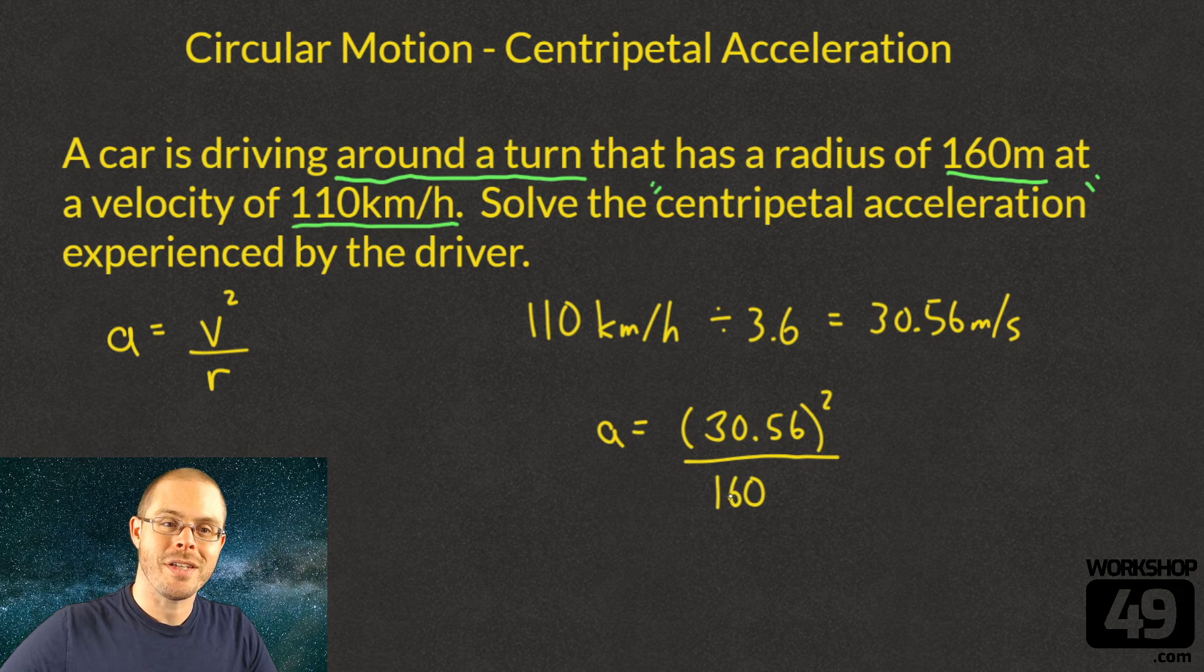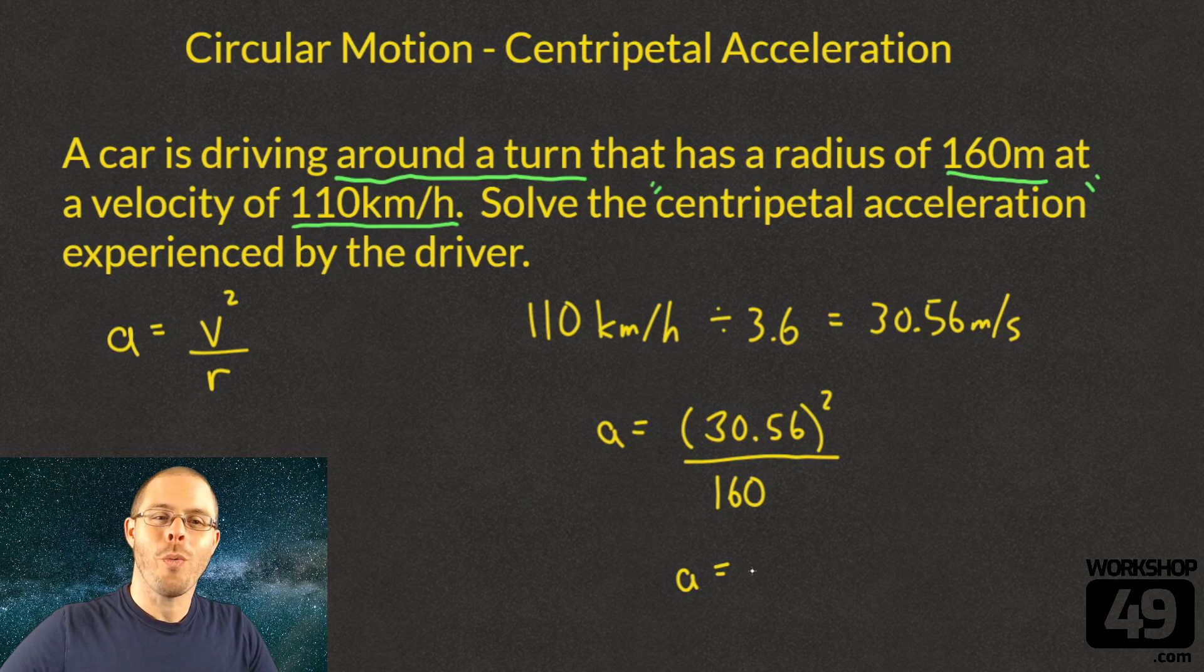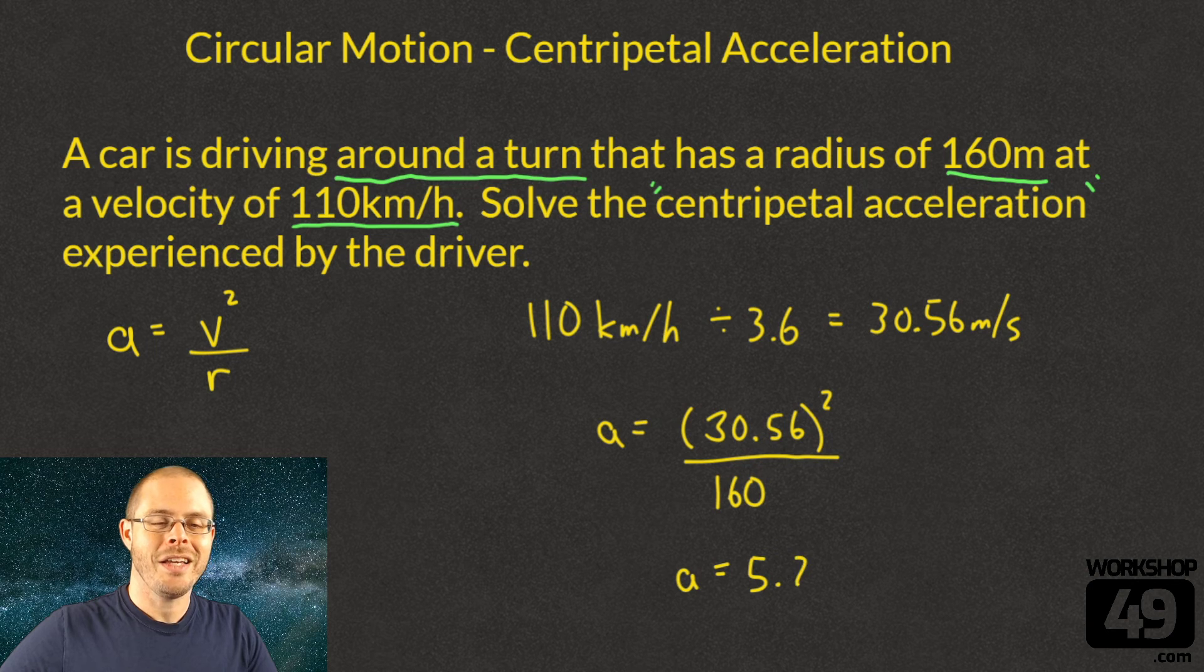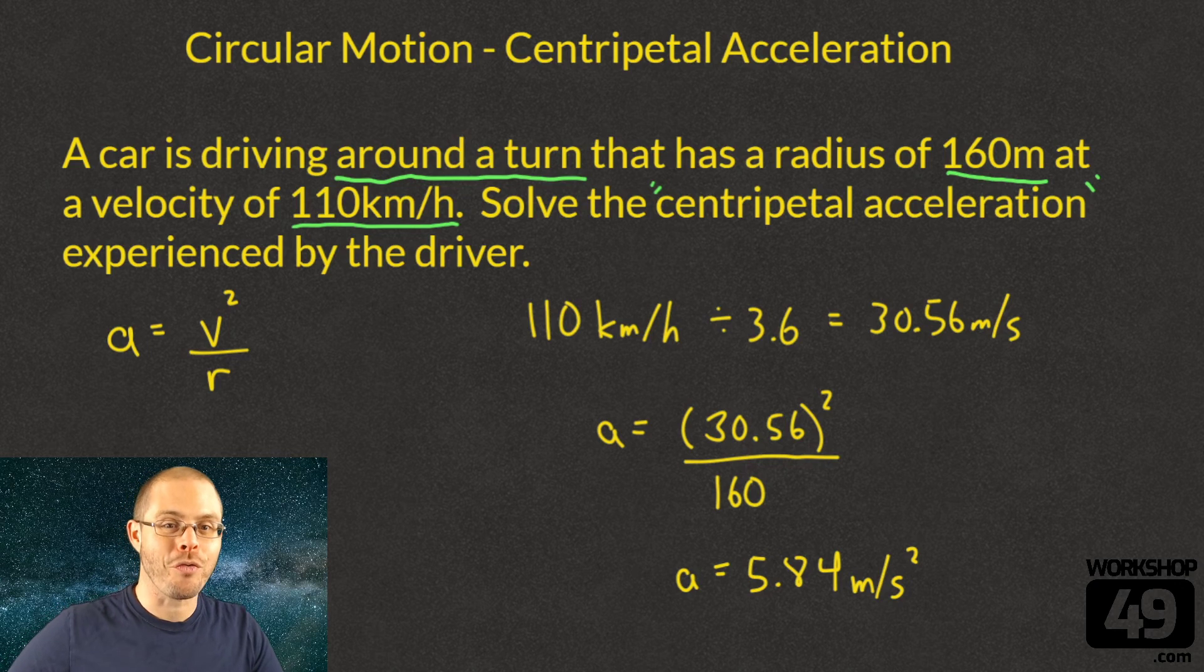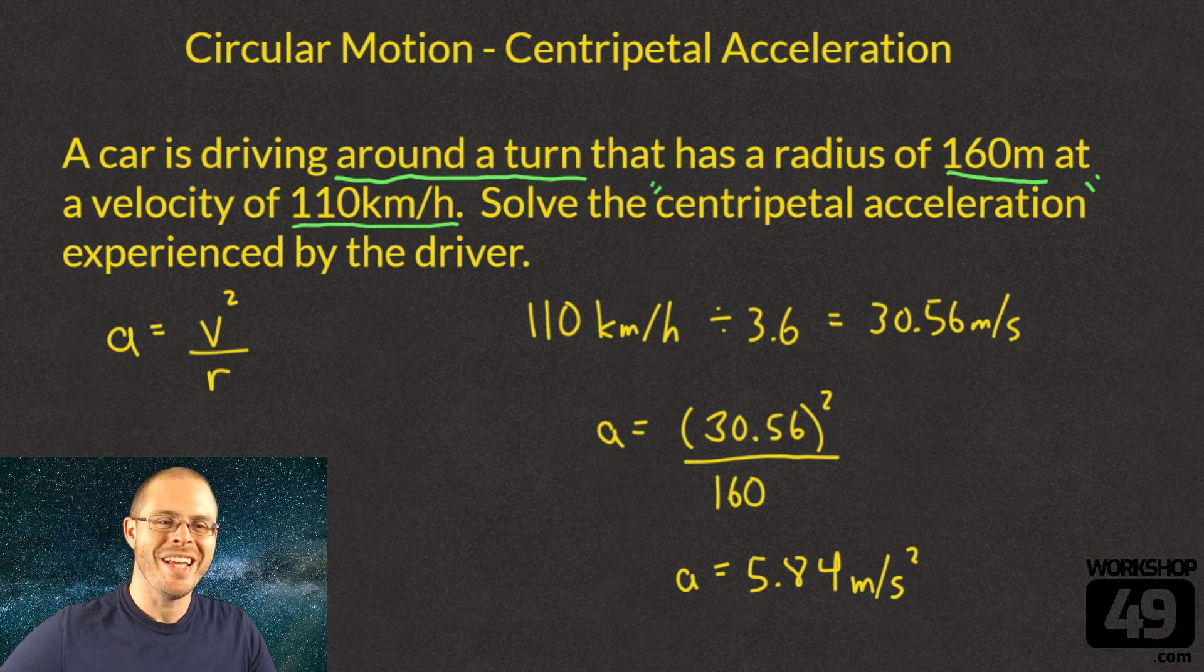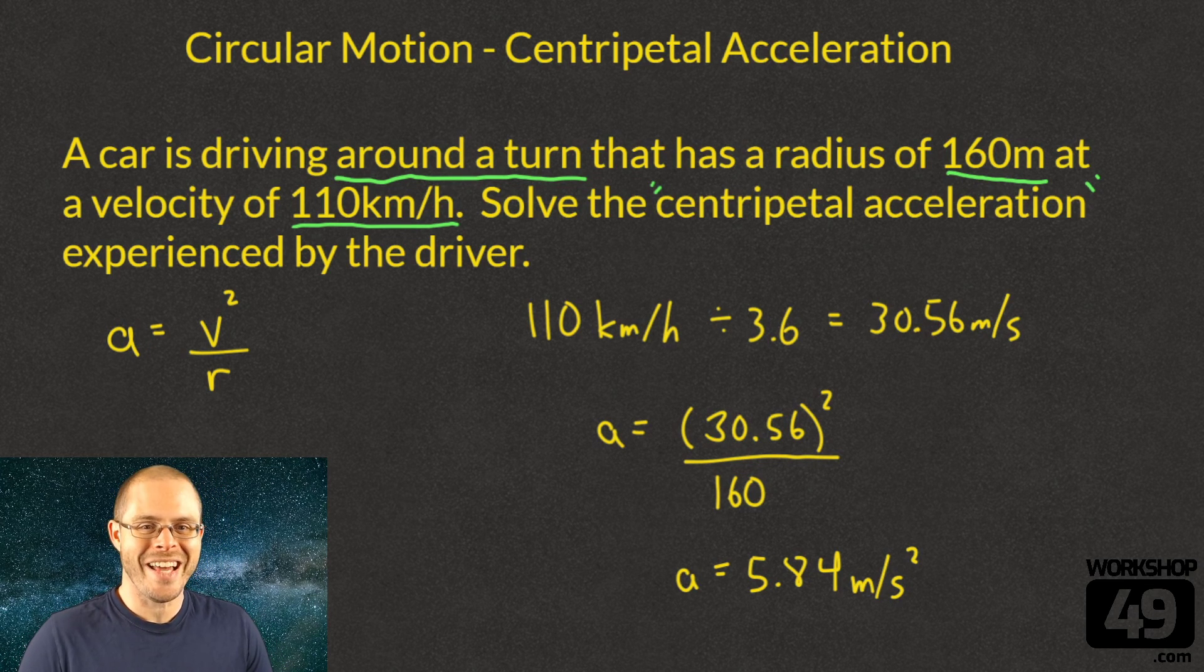We can plug this right into our calculator - no tricks. What it equals is a = 5.84 meters per second squared, about half the force of Earth's gravity. So yeah, you're going to feel a little bit of push over to the side of the door. Maybe you're white-knuckled hanging onto that seat, and you probably should slow down around this turn.